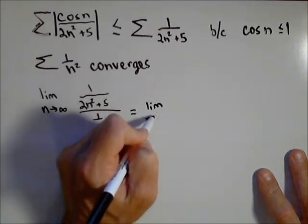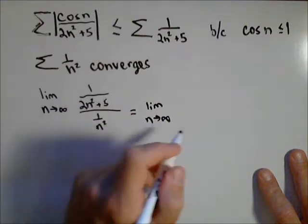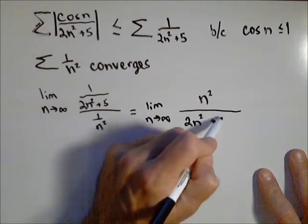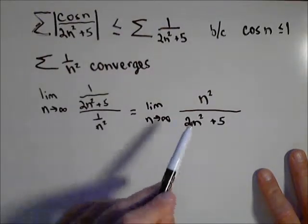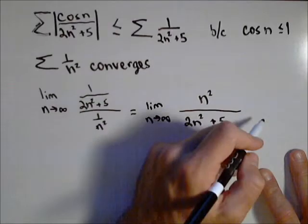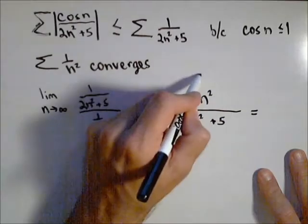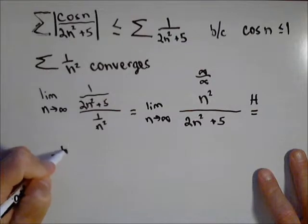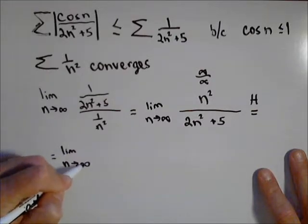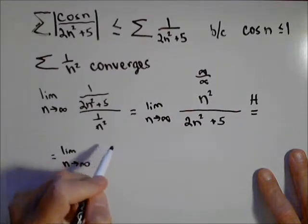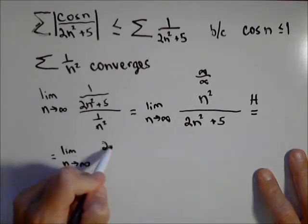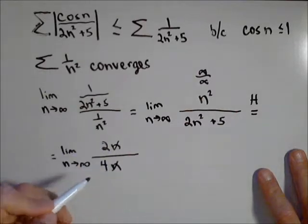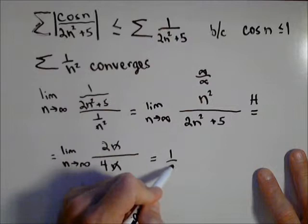Remember, with the limit comparison test, it doesn't matter which one you put on top — what's important is your choice of comparison. You want to choose something that you're going to be able to calculate the limit of. Flipping and multiplying, I end up with the limit as n goes to infinity of n squared over two n squared plus five. We have a rational function, and we have an infinity over infinity case, so this is a candidate for L'Hôpital's rule. Taking the derivative on top over the derivative on bottom gives two n over four n. The n's cancel and I get two-fourths, or one half, which is a non-zero finite number.